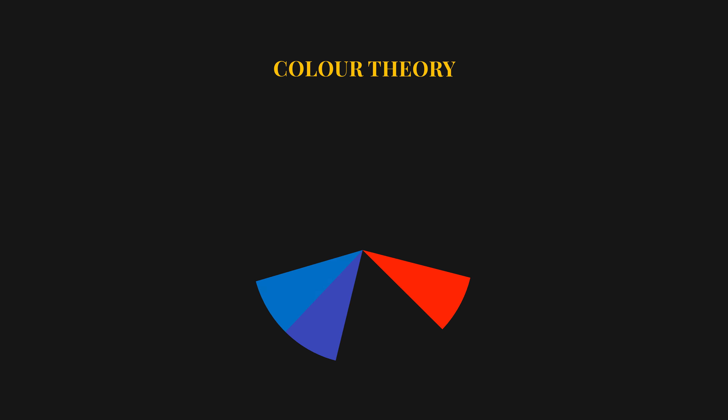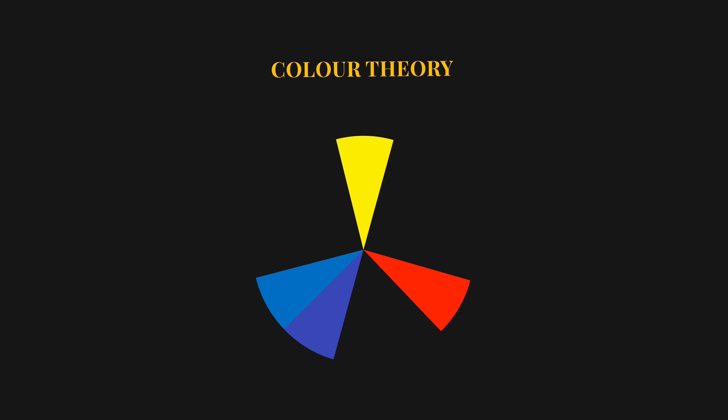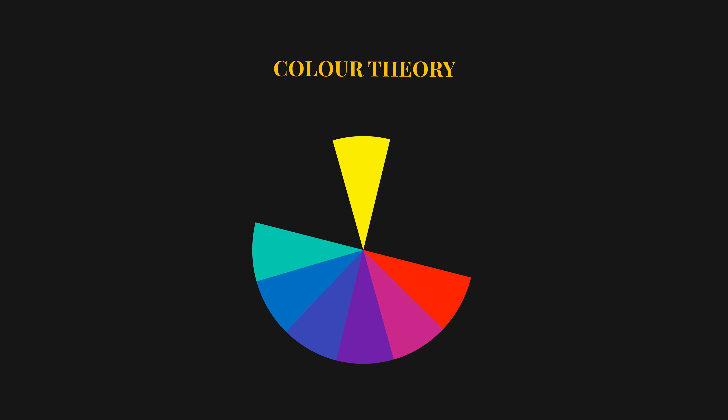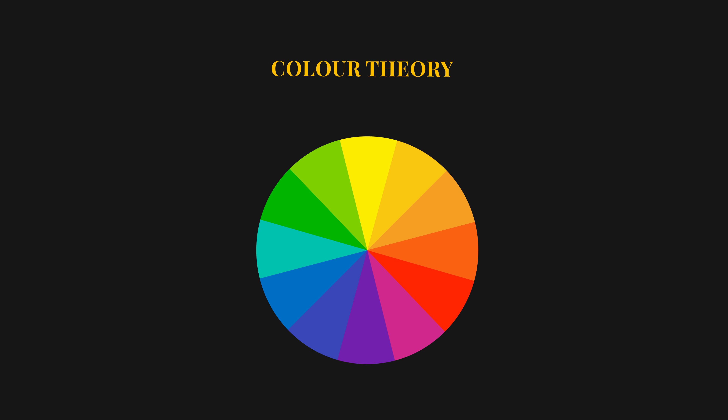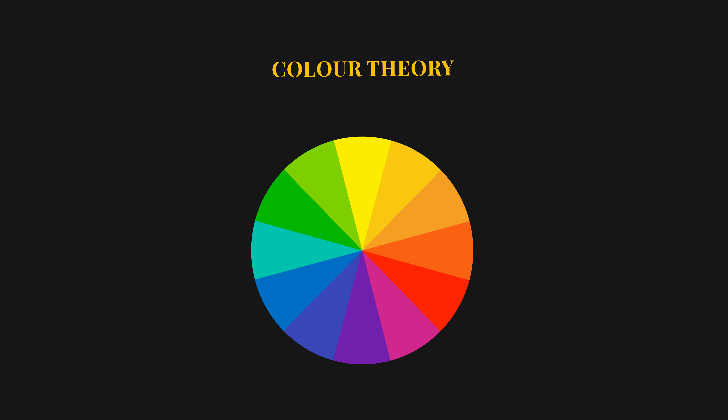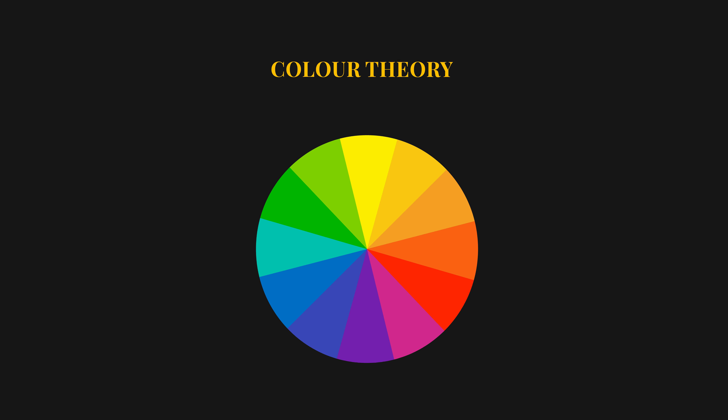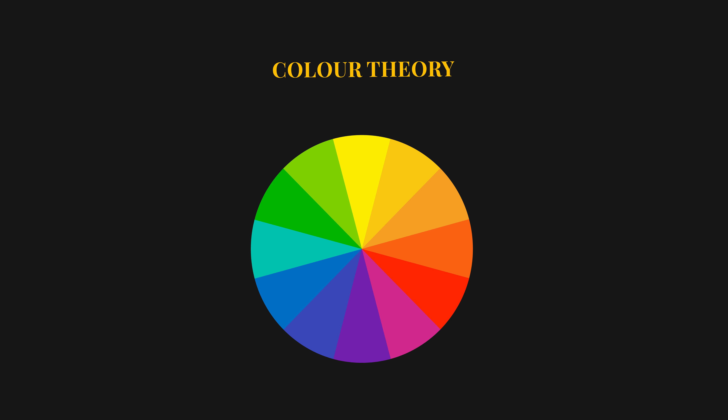But before we dive into the tool itself, let's talk about the fundamentals of color theory to understand why this tool is so important for us photographers. The color wheel is a photographer's best friend. It's divided into primary colors — red, blue, and yellow — and their combinations such as secondary colors: purple, green, and orange. Understanding this wheel helps comprehend how colors interact and complement each other in our photos.